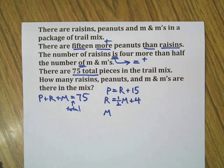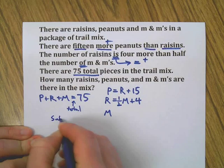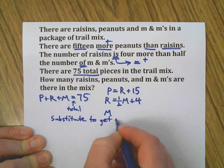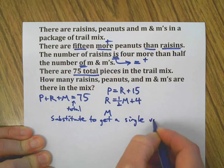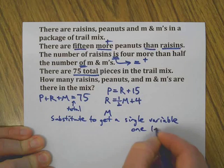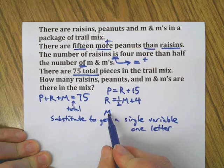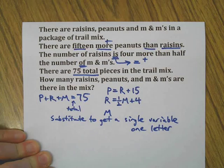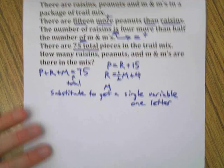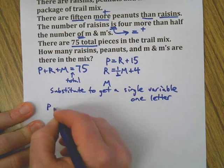All right, so we want to substitute to get a single variable. Single variable is a fancy way of saying one letter. I think I want to have M be the one letter here, because that's going to be the easiest thing, and I always try to make problems as easy as possible. So can I do P in terms of M? Meaning I want all M's in this, so I can solve for M and figure out what else.